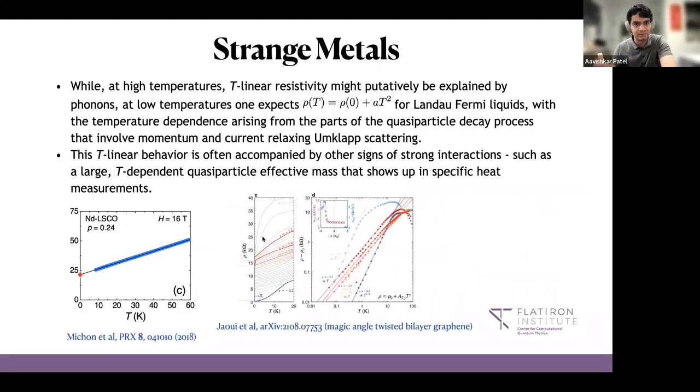So the T-linear resistivity in and of itself is not that unusual because one definitely can find it at high temperatures where phonons are activated at some Debye or Bloch-Grüneisen scales. But what is very interesting about these strange metals is that this T-linear resistivity extends down to very low temperatures. For example there's this result on NDLSCO cuprates where superconductivity is suppressed by magnetic fields and the T-linear resistivity extends down to temperatures below 10 Kelvin where phonons are certainly not playing a role.